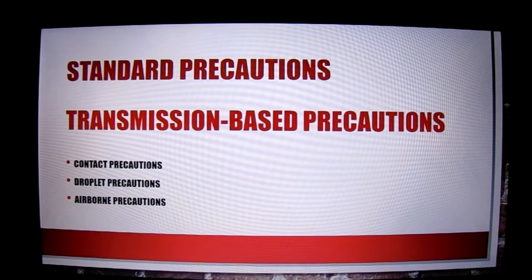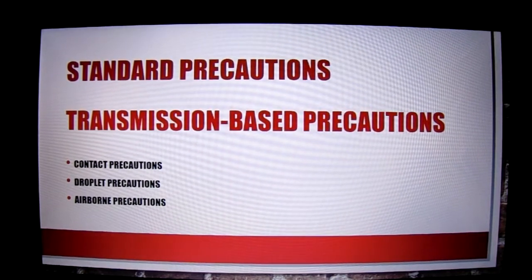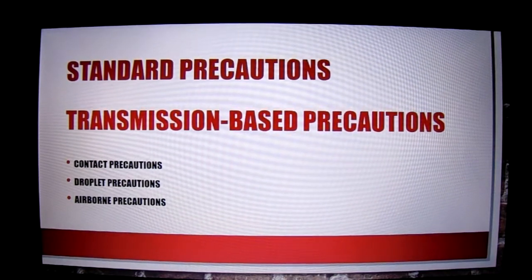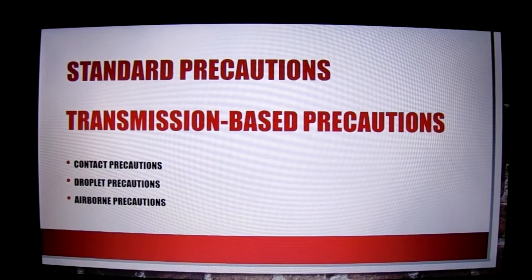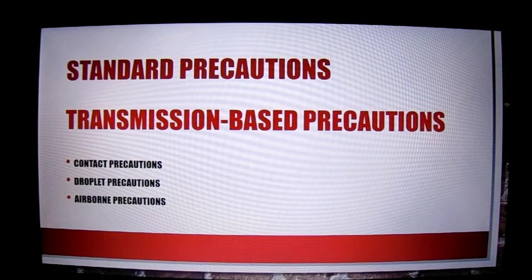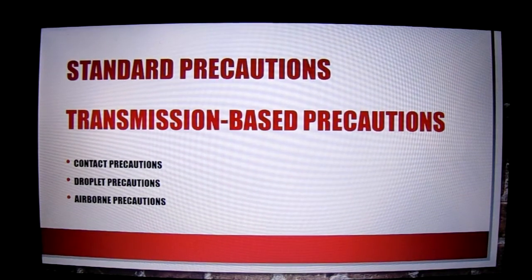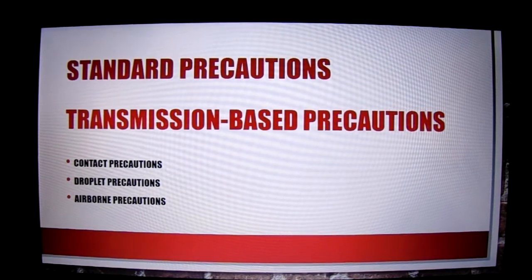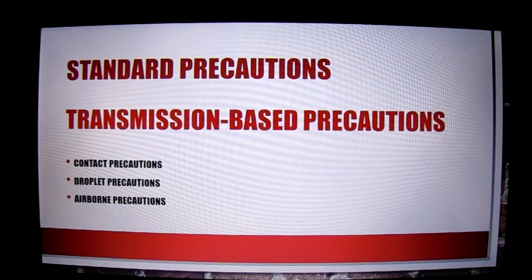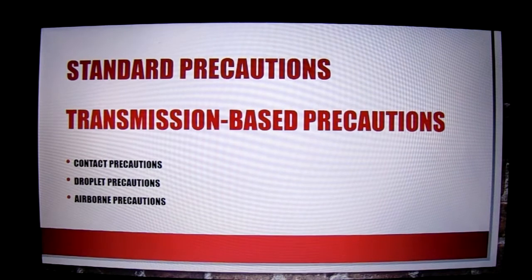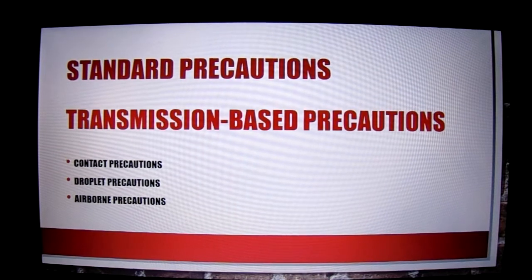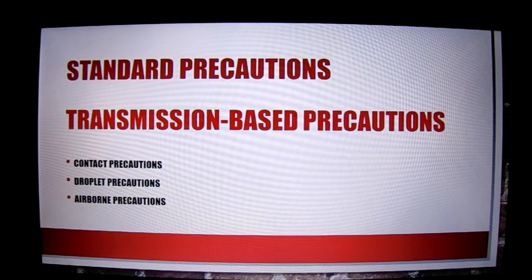Transmission-based precautions are specific to the individual's infectious status. There are three different types: contact precautions, droplet precautions, and airborne precautions. Your personal protective equipment will depend on the type of precautions the person is on. All three precautions require isolation of the patient or resident. Contact precautions are put in place when there is a concern of the patient transferring the infection from touch or contact. Contact precautions would be useful for infections such as lice, scabies, pink eye, and MRSA. PPE, or personal protective equipment, would include a gown and gloves.